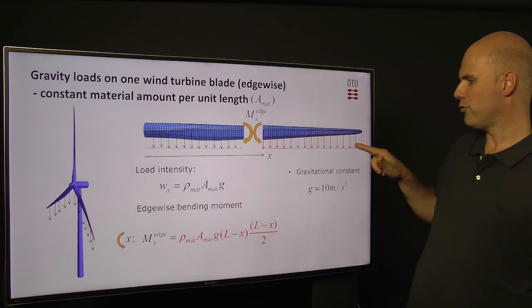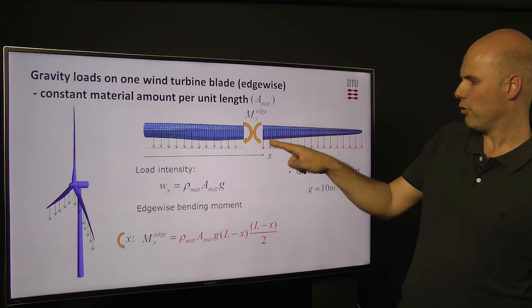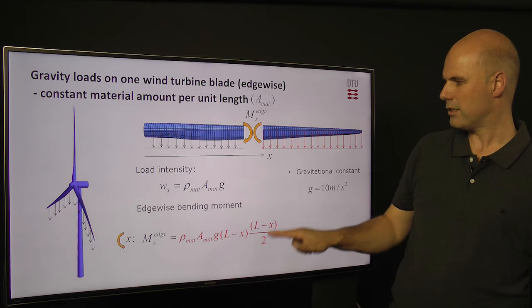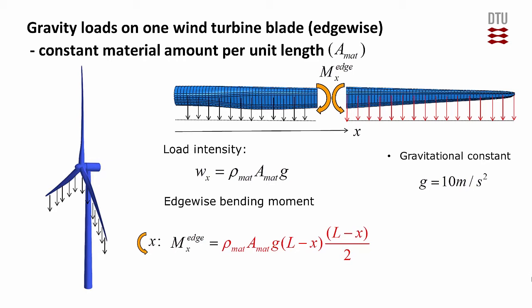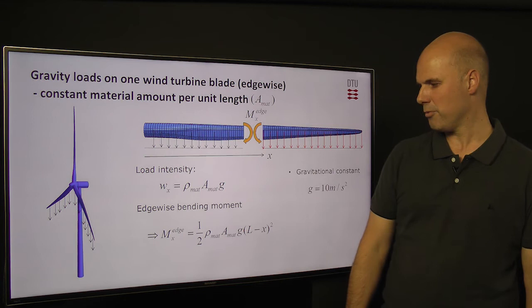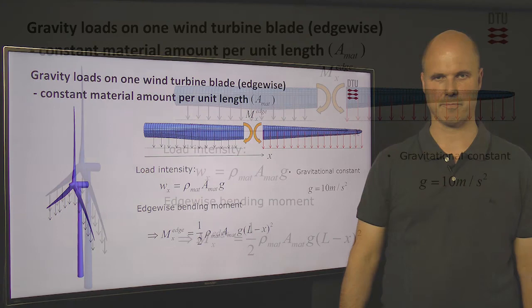Again, we have this uniform load intensity, and the load will work at the midpoint — given by the intensity multiplied by the length of the section — and then the moment arm from that point. This equation can be derived in a short form, giving the moment at an arbitrary point in our blade.